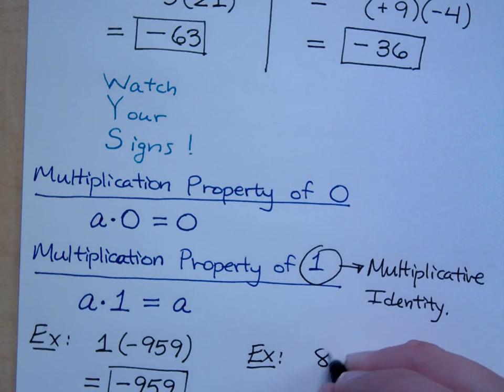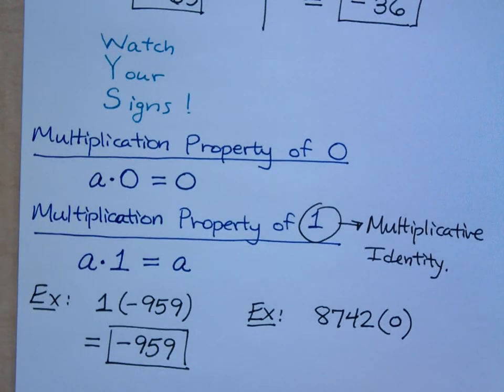Or if I take 8,742 times zero, what do you get there? You get zero, right? If you multiply any number times zero, you get what? Zero. So, if you've ever played around in a calculator and you're just multiplying numbers, and someone comes along and accidentally types in zero when you're multiplying, you've lost everything, right?